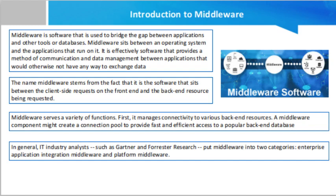Middleware categories: IT industry analysts such as Gartner and Forrester Research put middleware into two categories: enterprise application integration middleware and platform middleware. Enterprise application integration middleware enables programmers to create business applications without having to custom craft integrations for each new application. It helps software and service components work together, providing a layer of functionality for data consistency and multi-enterprise or B2B integration. Typically, integration middleware provides messaging services so different applications can communicate using frameworks like SOAP, Web Services, REST, or JSON. Other middleware technologies in this category include object request broker (ORB) and data representation technologies like XML.